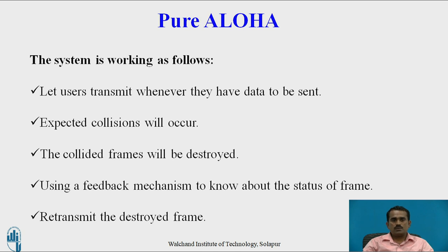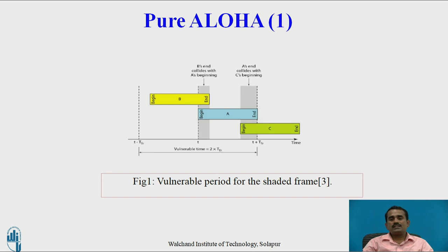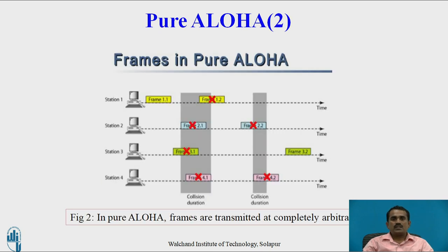The system works as follows: if the user has data to transmit, they can transmit whenever they want. After transmitting, the user should wait to know whether the data went through or a collision occurred. If a collision occurs, the data can be destroyed. A feedback mechanism is used to know the status of the frame, and destroyed frames are retransmitted. In Pure Aloha, there are three or four stations transmitting frames simultaneously.